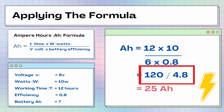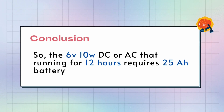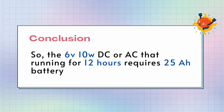And the final result is 25 ampere hours. So our battery capacity is 25 ampere hours. We finally come to the end. To summarize what we learned: we now understand the formula to calculate the battery capacity. A component with 6 volts direct current or alternating current, running for 12 hours, requires 25 ampere hours of battery.